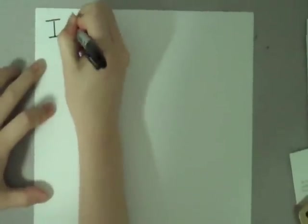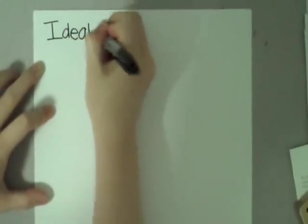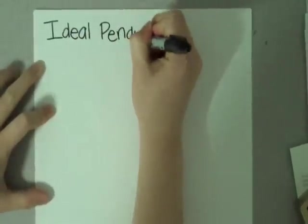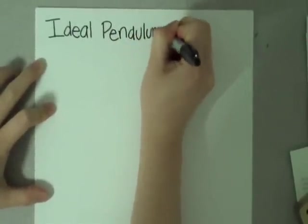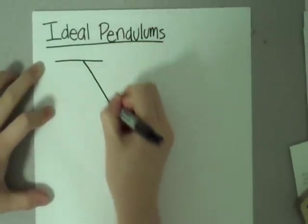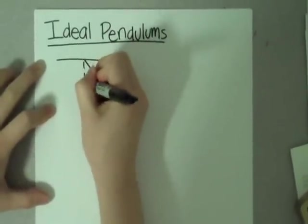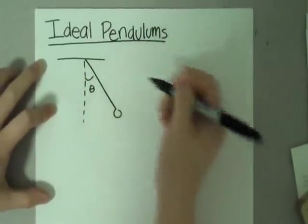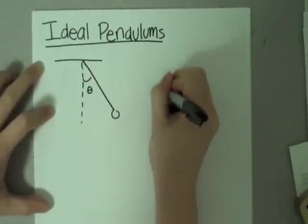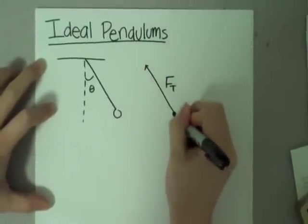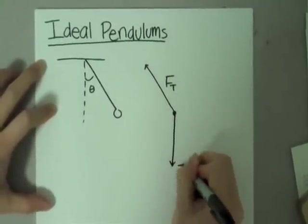Hi, my name is David, and today I'll be talking to you guys about how to solve the period of pendulums. I will begin this lecture by talking about how to solve and find the period of an ideal pendulum. An ideal pendulum is something I am currently drawing on the paper. It is simply composed of a string with a mass attached to the end. There are two assumptions to this: that the string is massless, and that the mass at the very end is a point mass.